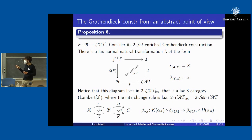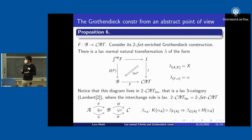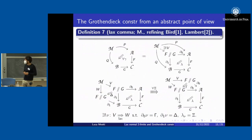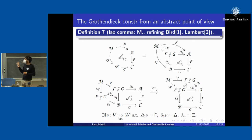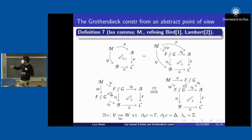In this setting the interchange rule is lax: if we have alpha and beta, taking the structure two-cells of beta on the components of alpha gives a free cell between two different evaluations of that horizontal composition. A way to capture this is by considering what I call a two-set enrichment — the idea being to start from Set, enrich over it to get Cat, and then weakly enrich over Cat, since otherwise we would enrich just on the underlying category of Cat losing information.